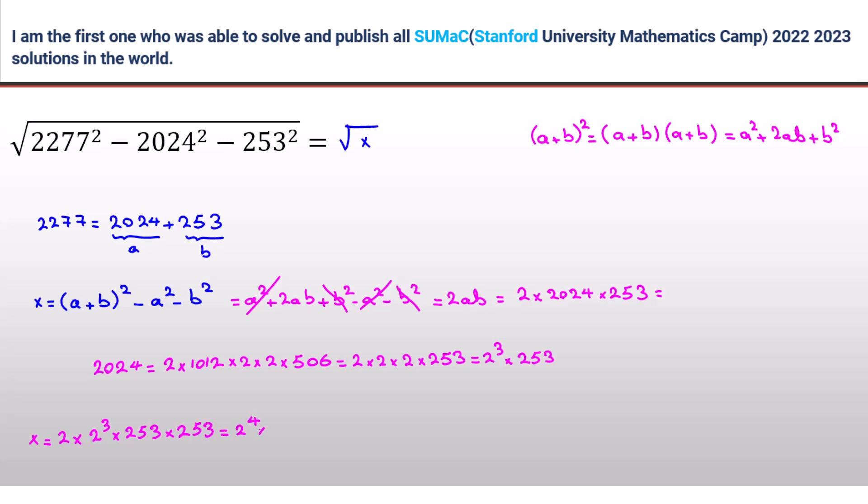So it will be 2 to the 4 times 253 squared. 2 to the 4 is 16. We can say 4 squared times 253 squared. Now if we take a square root, square root of x, which is our answer, is equal to...